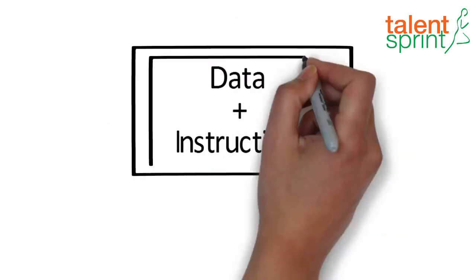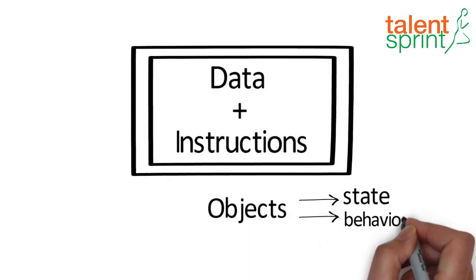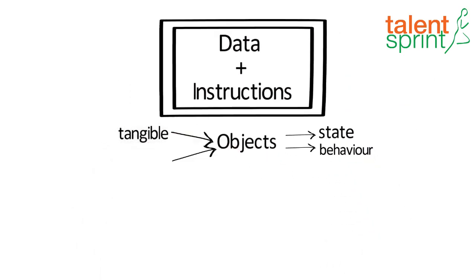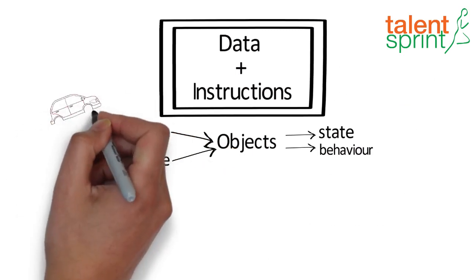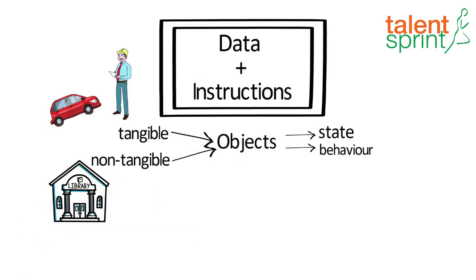Java combines the data and instructions into objects which have a state and behavior. In Java you can represent any tangible or non-tangible real world entity as object, for example cars, humans, library system, etc.